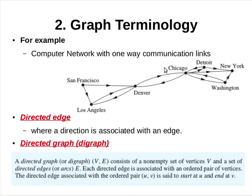In a computer network, some links may operate only in one direction. This occurs when there is a large amount of traffic sent to some data centers with little or no traffic going in the opposite direction. Such a network is depicted using directed edges, where a direction is associated with an edge. For example, in the edge Chicago to New York, data flows from the data center located at Chicago to New York.